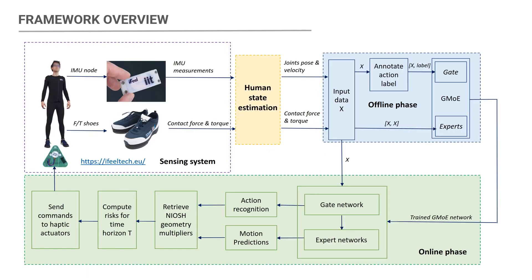Based on this idea, we implemented a framework that consists of four modules. The sensing system collects IMU measurements and contact ranges. The human state estimation module takes variable data as inputs and computes joint configurations as well as contact forces by solving inverse kinematics and inverse dynamics problems.